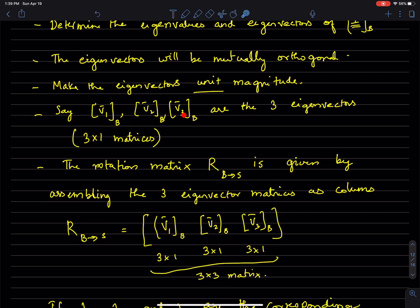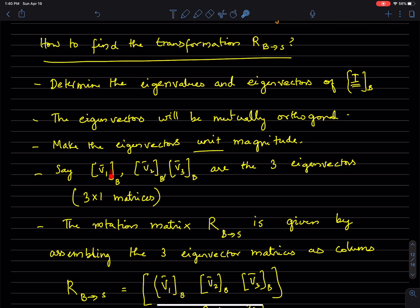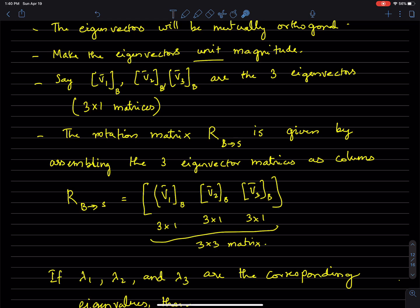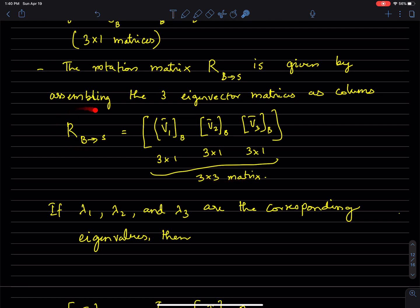Let's say V1, V2, V3 are the three eigenvectors — three-by-one matrices representing the eigenvectors of the moment of inertia tensor in frame B, converted to unit magnitudes. The result is that the rotation matrix R from B to S is given by taking these three eigenvectors and arranging them as three columns of a matrix, assembling a three-by-three matrix. That matrix is the transformation that takes you from a frame in which the moment of inertia is not diagonal to one in which it is diagonal.